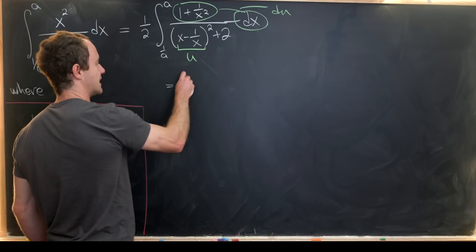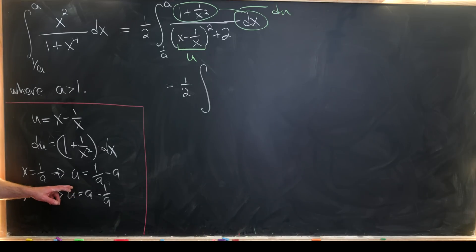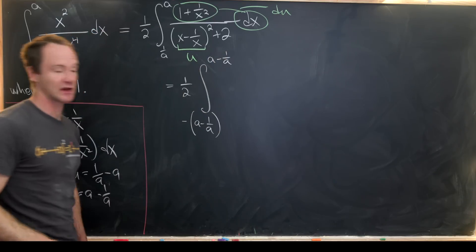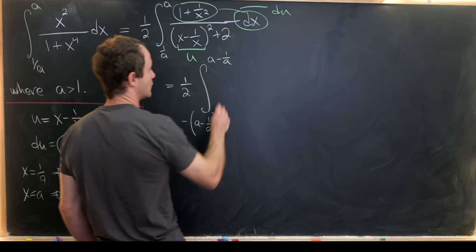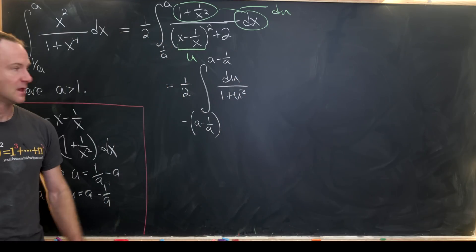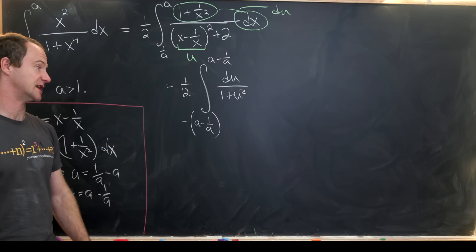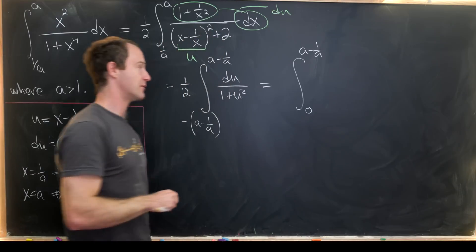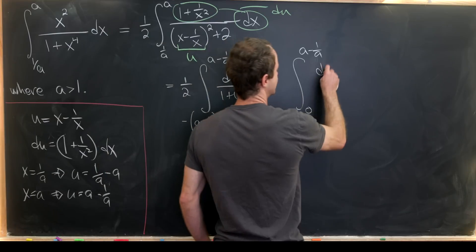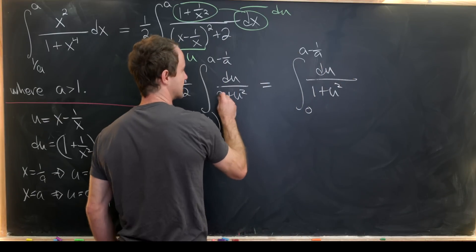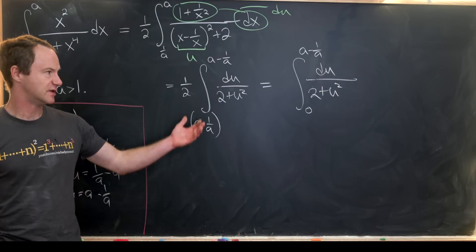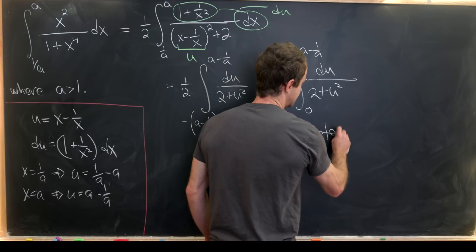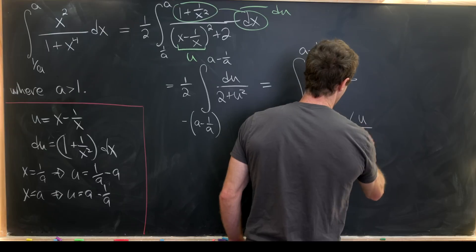We rewrite this as 1 half the integral from minus (a minus 1 over a) up to (a minus 1 over a) of du over u squared plus 2, recognizing the symmetric interval. Since we have an even function integrated over a symmetric interval, we can change the interval from 0 to (a minus 1 over a) and multiply by 2, which cancels the 1 half. So we get the integral from 0 to (a minus 1 over a) of du over u squared plus 2. That's a standard integral with antiderivative 1 over sqrt(2) times arctan(u over sqrt(2)).